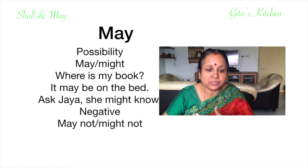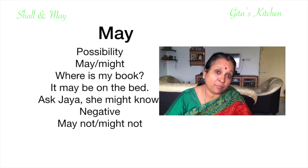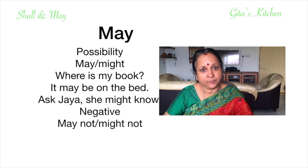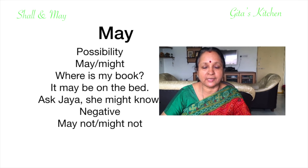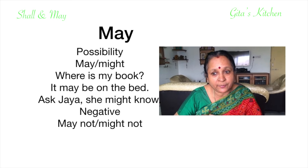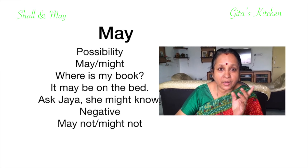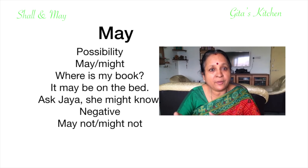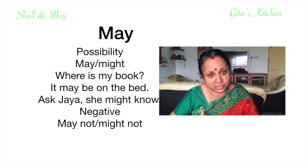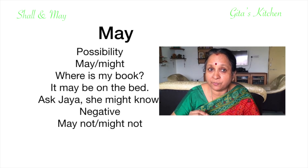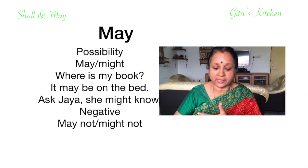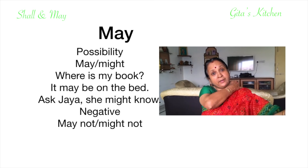We use 'may' for permission as well as for possibility. For example, when we say 'May I come in?' we are asking for permission. As for possibility — let's say I am looking for my specs and I ask 'Where are my specs?' Somebody says 'It may be on the bookshelf' or 'It may be on the bed.' That means perhaps it is on the bookshelf, perhaps it is on the bed. 'Perhaps' — P-E-R-H-A-P-S — also means 'maybe,' and indicates a possibility.